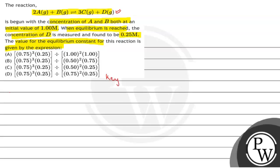Key concept here is equilibrium constant which is denoted by KC. तो KC क्या है — it is an equilibrium constant which is used to express the concentrations of reactants and products at equilibrium.